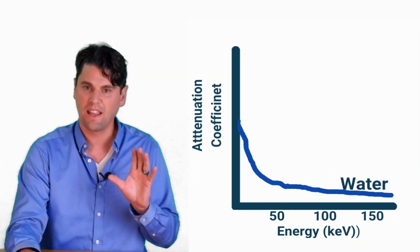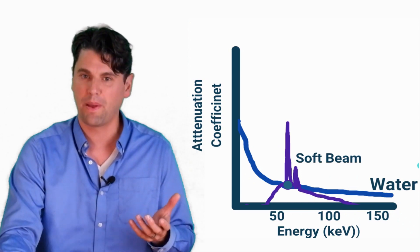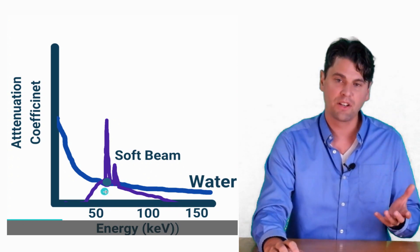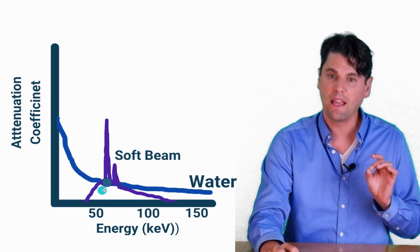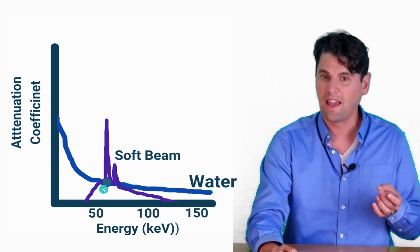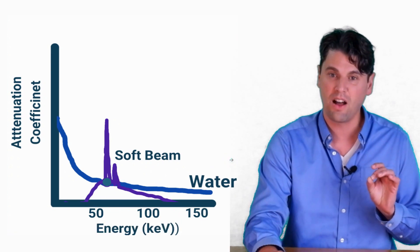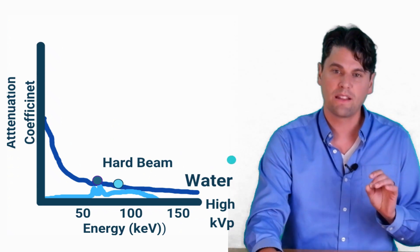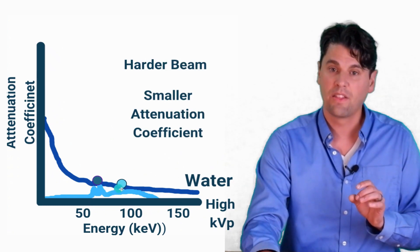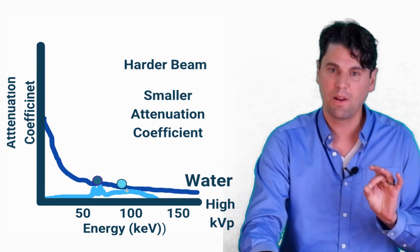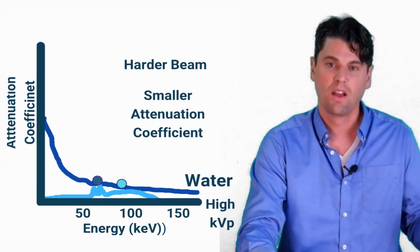Now that we know there's a change in the spectrum, how does that actually affect the attenuation coefficient? If you look at the average x-ray attenuation of a softer x-ray beam, you multiply how many x-rays are at each energy by the attenuation coefficient at that energy to get an average. If you do the same for the harder beam — which has shifted to higher energies — the harder beam actually has a lower attenuation coefficient.